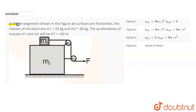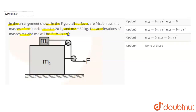In this question, we have given an arrangement shown in the figure. All surfaces are frictionless. The masses of the blocks are m1 = 20 kg and m2 = 30 kg. We need to find the accelerations of masses m1 and m2, if F equals 180 N.